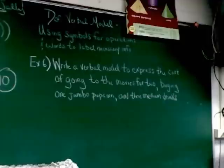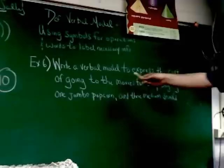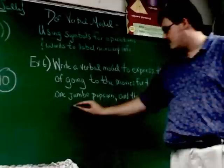Let's take a look at example 6. Write a verbal model to express the cost of going to the movies for two, buying one jumbo popcorn, and three medium drinks. Alright. So, let's go ahead and write this expression. First thing we obviously have in this problem is going to the movies for two. So, I have to buy tickets, obviously.